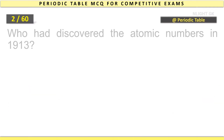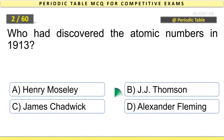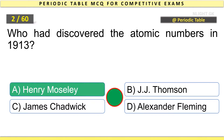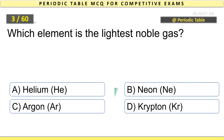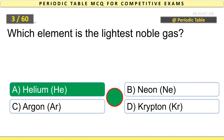Who had discovered the atomic numbers in 1913? Henry Moseley. Which element is the lightest noble gas? Helium.